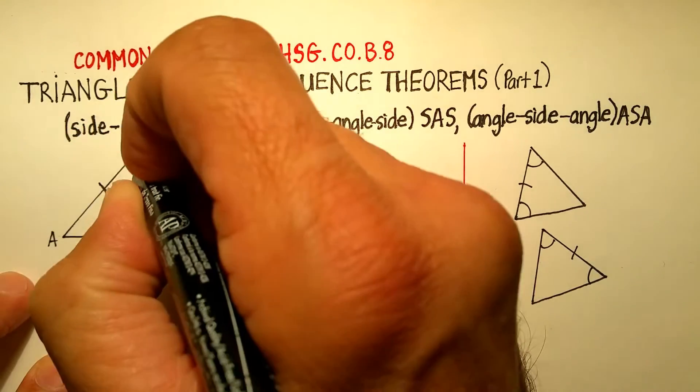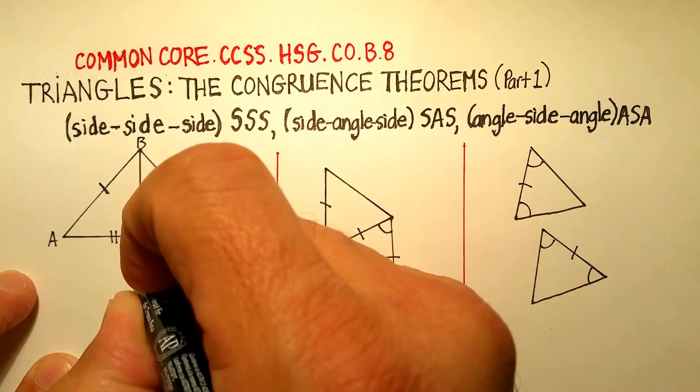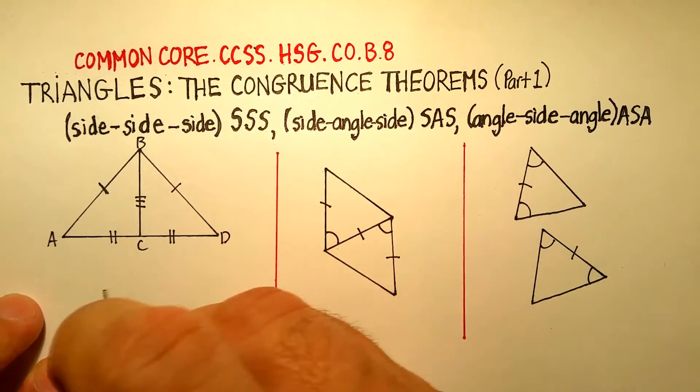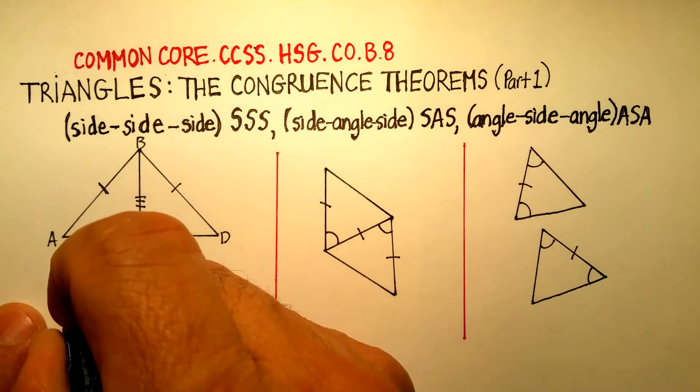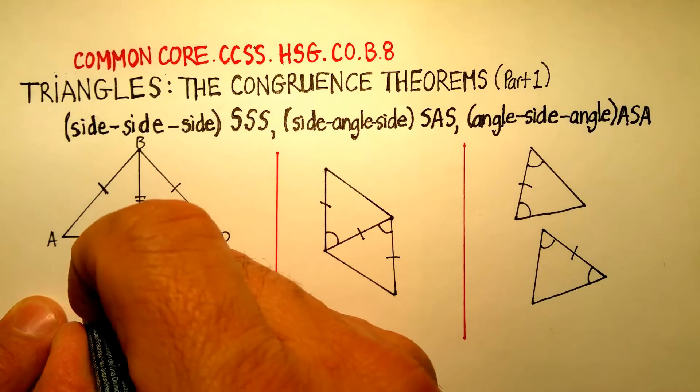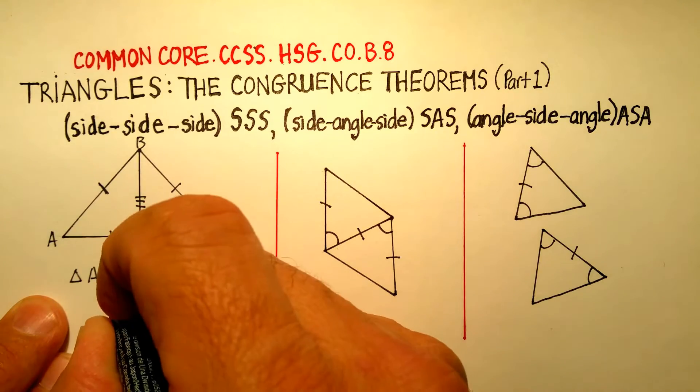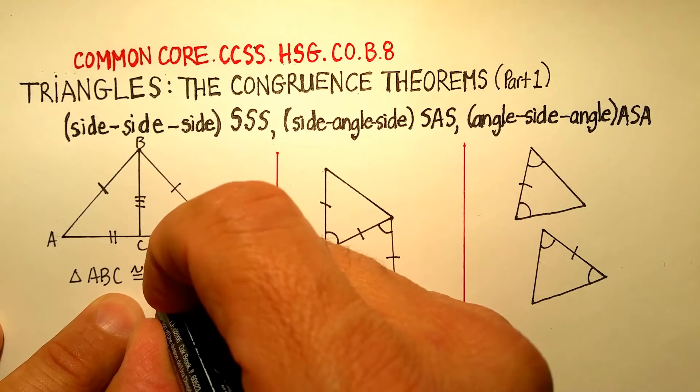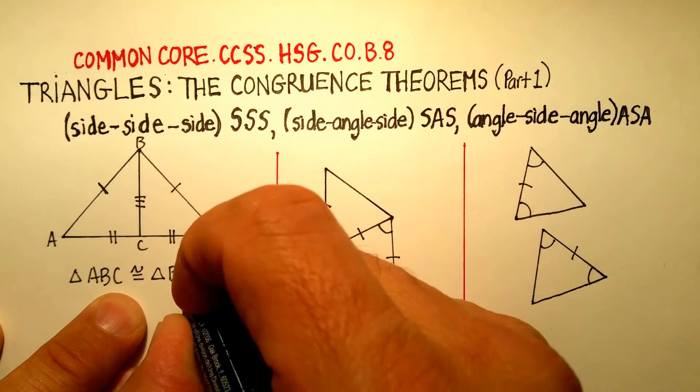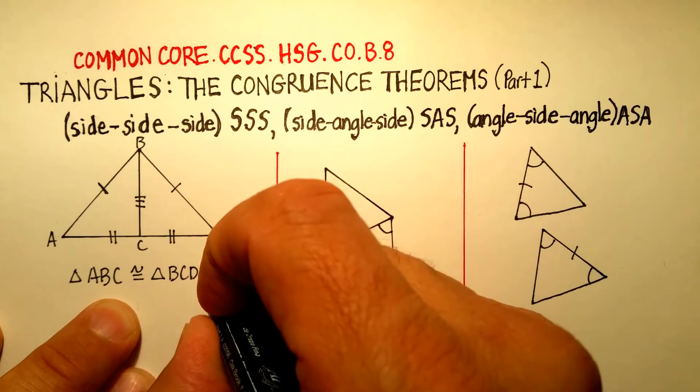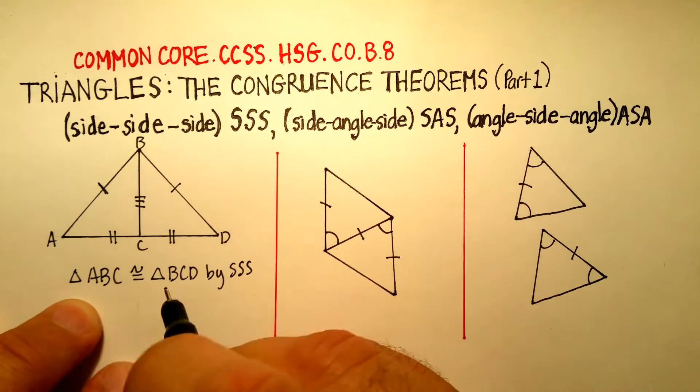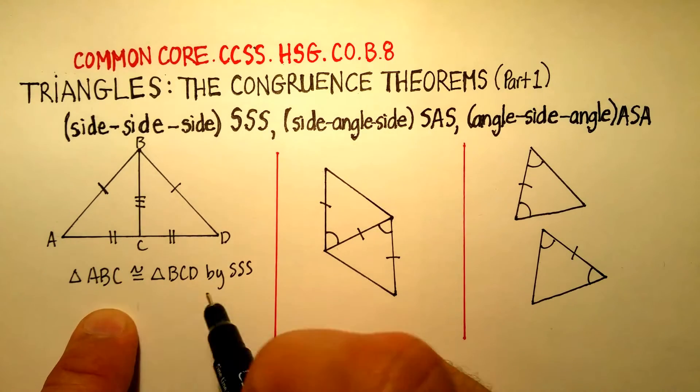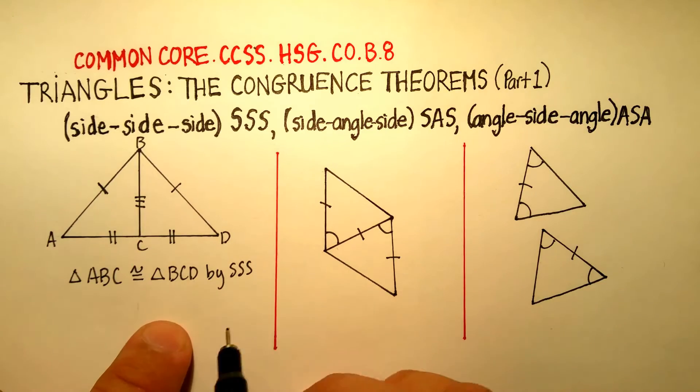So if I were just to label them, let's do this, A-B-C-D. I would say that triangle ABC is congruent to triangle BCD by side-side-side. So that would be like the proof that I would write for that.